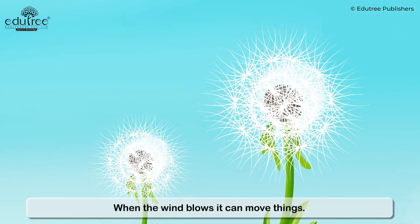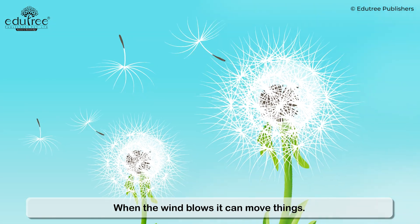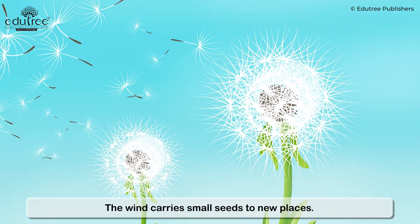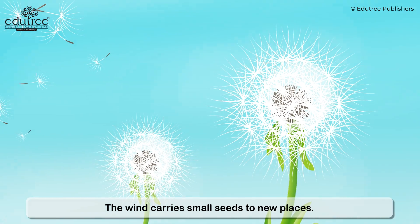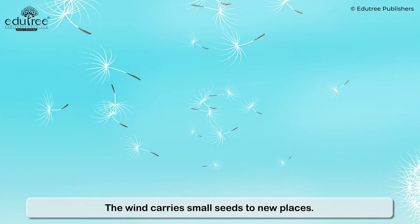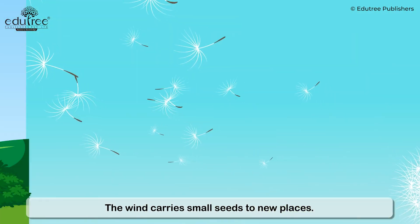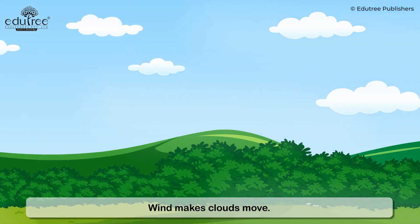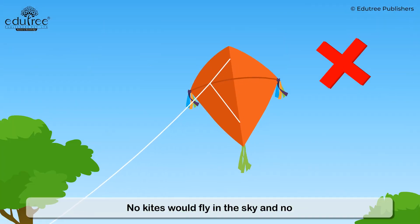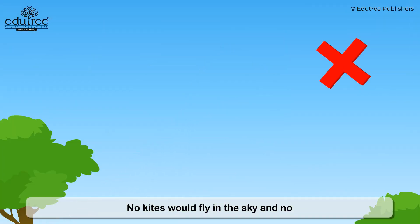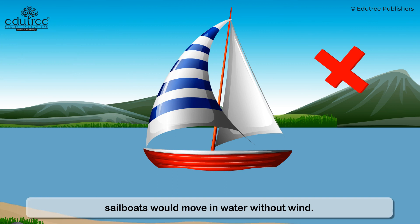When the wind blows, it can move things. The wind carries small seeds to new places. Wind makes clouds move. No kites would fly in the sky and no sailboats would move in water without wind.